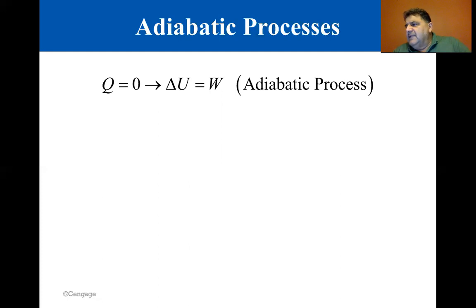For an ideal gas undergoing an adiabatic process, we get the relationship shown, where gamma is called the adiabatic index of the gas.